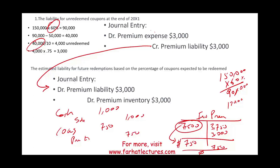The key concept here is to match the expense with the revenue, and to book a liability against that estimated expense until the obligation is fulfilled. Understanding how to accrue and reduce a premium liability is essential. For additional MCQs, true-false questions, and lectures to reinforce these concepts — whether you're studying for your CPA, CMA, or other accounting certifications — visit Farhat Lectures and invest in yourself.